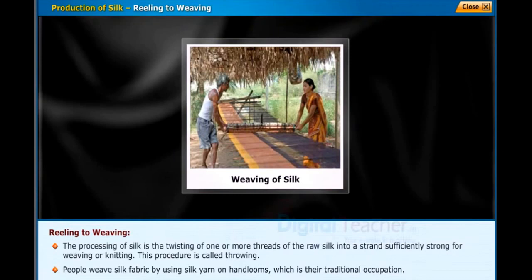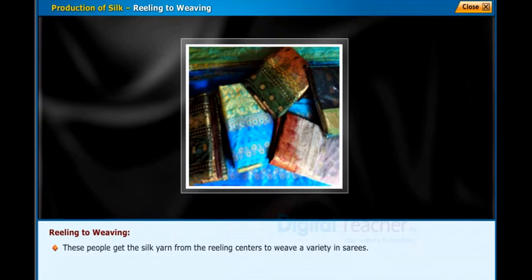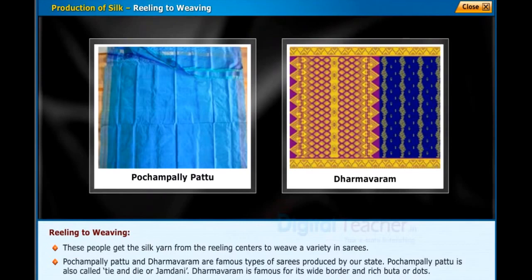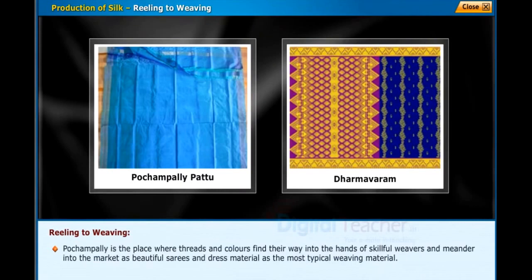Weavers produce a variety of saris. Pochampalli pattu and Dharmavaram are famous types of saris produced in our state. Pochampalli pattu is also called tie and dye or jamdani. Dharmavaram is famous for its wide border and rich buttas or dots.